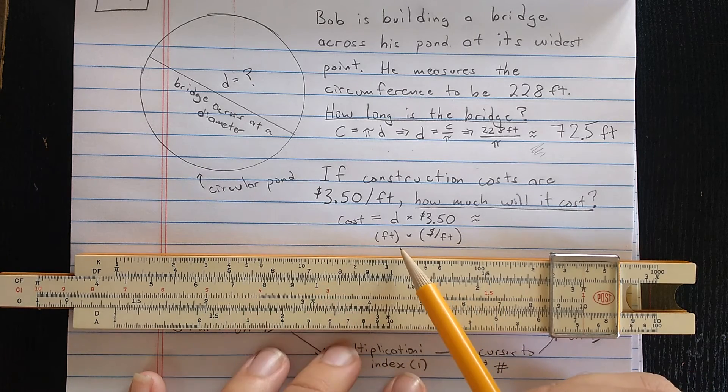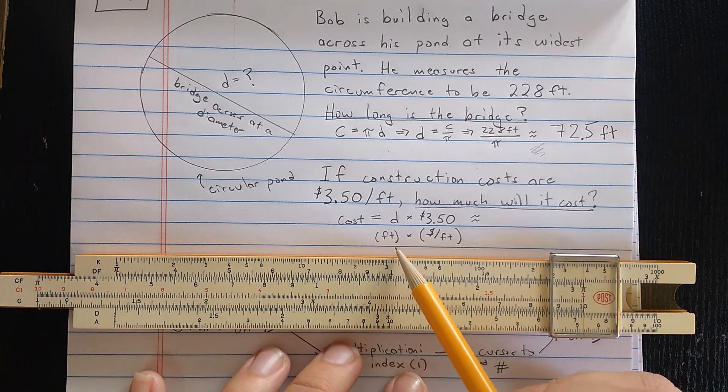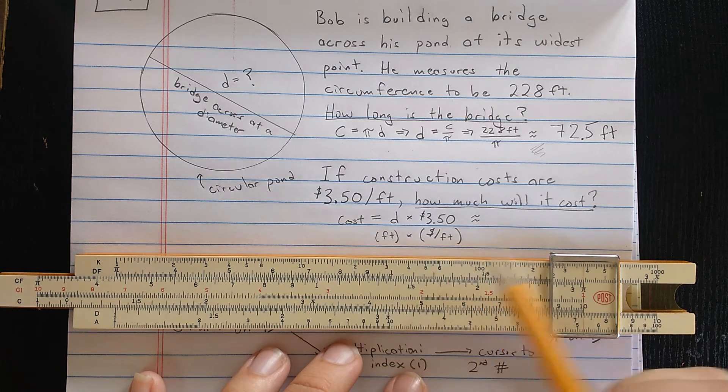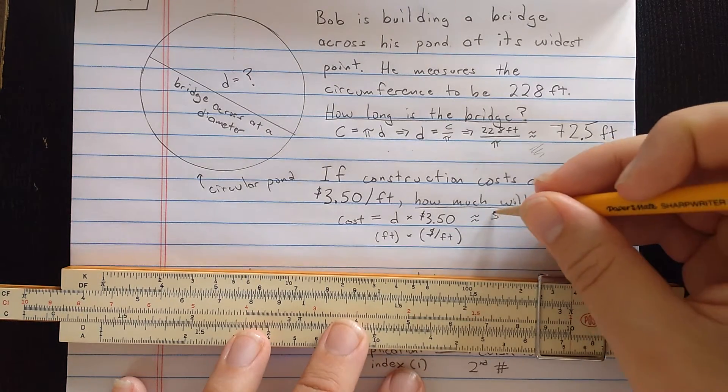So if you look at the units here, I'll have feet times dollars per foot, result will be dollars, and result will again be approximate.